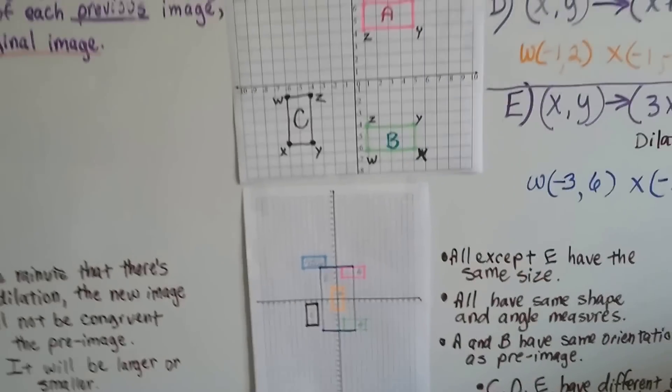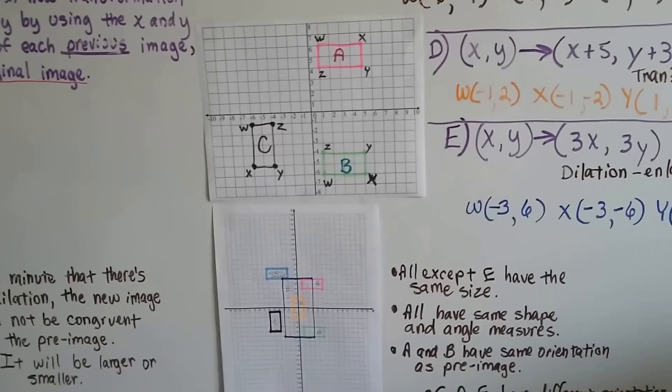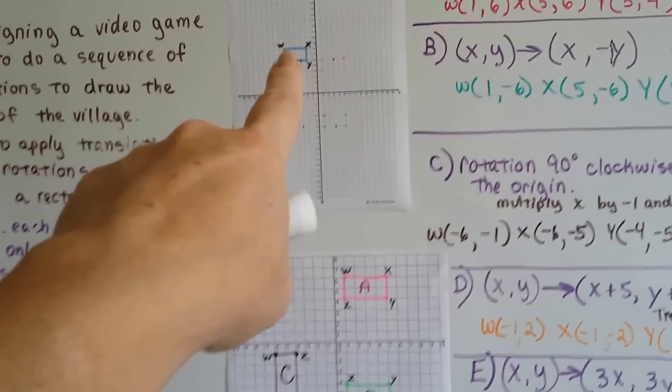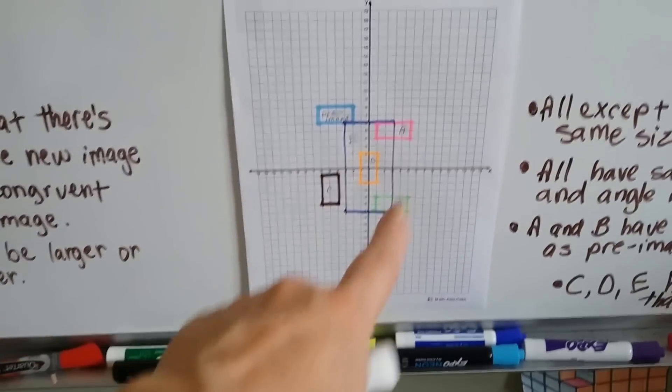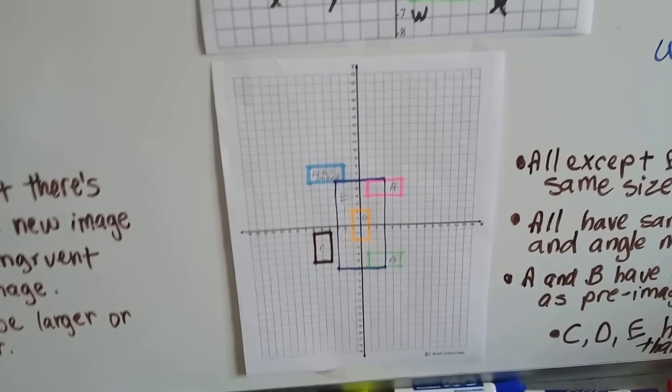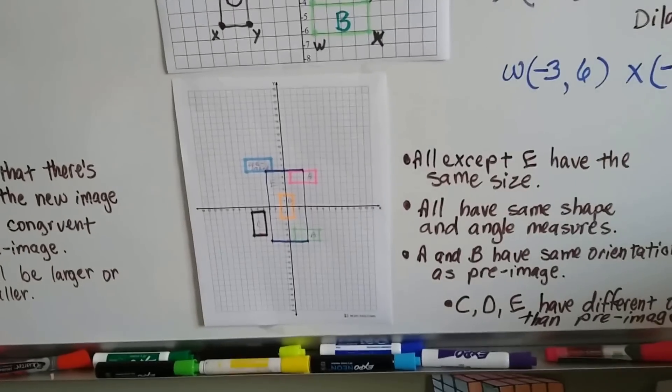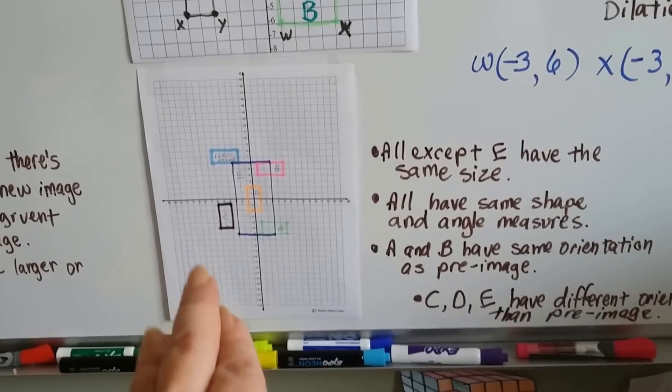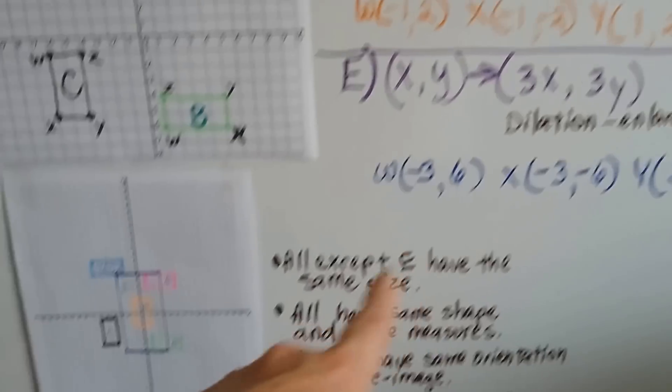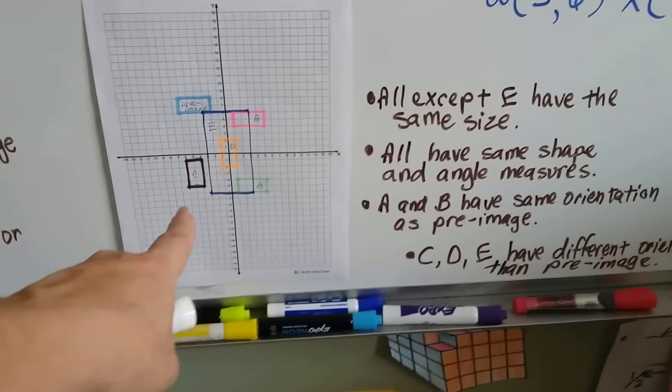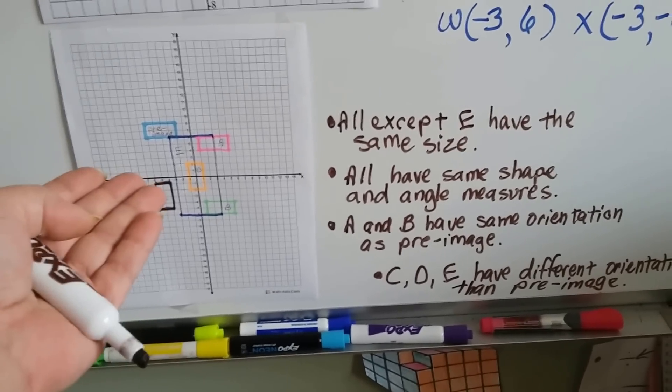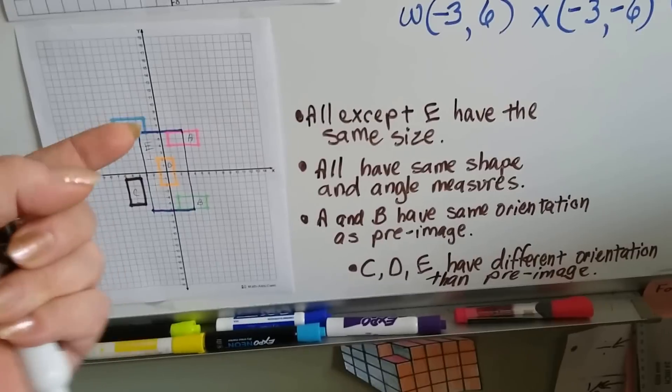So we were able to do all these different transformations and dilations to this rectangle, and it was originally up here in the second quadrant. And now, look, it's like we've created an entire village and a big, huge main building. So see how you could do that if you were designing a game? All the rectangles, except E, that's the big blue one, have the same size. Because remember, E was a dilation enlargement that multiplied by 3. So every single rectangle is the same size except for the dark blue one, the big one. They all have the same shape and angle measures. They're all rectangles. They all have 90 degree interior angles. And A and B have the same orientation. Here's the pre-image. Here's A, the pink one, and B, the green one. They've got the same orientation as the pre-image.